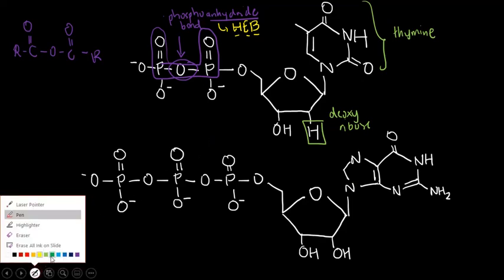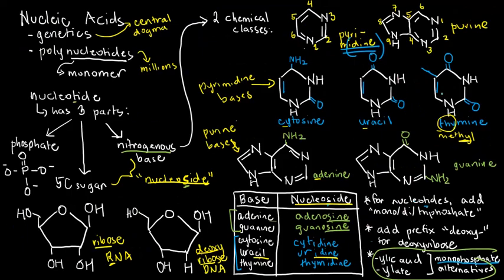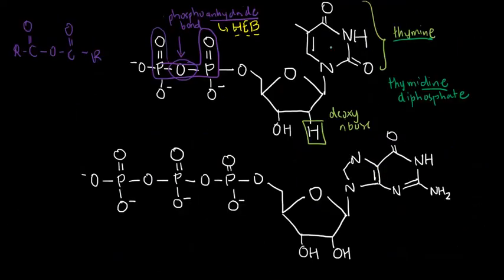So we're ready to name the entire thing. Since we have thymine as the base, and the suffix for pyrimidine nucleosides is '-idine,' we call this thymidine. Since there are two phosphates, this is diphosphate. And since the sugar is deoxyribose, we add the prefix 'deoxy.' So the complete name is deoxythymidine diphosphate.